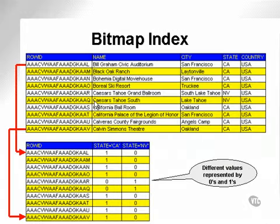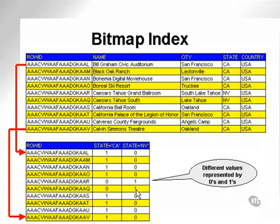A bitmap index: as you can see, I have a table with its attached row IDs, and here is a bitmap — a map of bits, ones and zeros. The state for the first row is California, so I put a one in the California column and a zero in Nevada. The fifth and sixth rows are both in Nevada, so they get a one in Nevada and a zero in California. This index would be a lot smaller and occupy far less space than a B-tree index — imagine a table with a million rows.